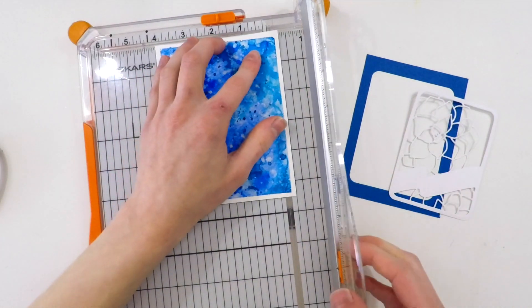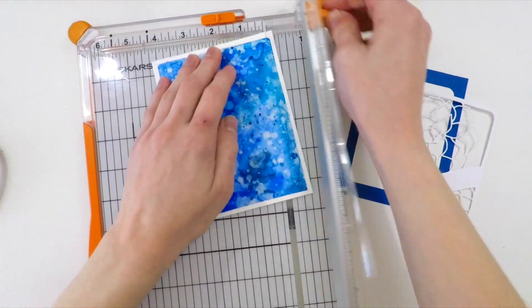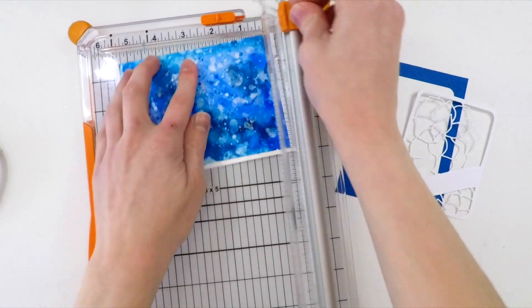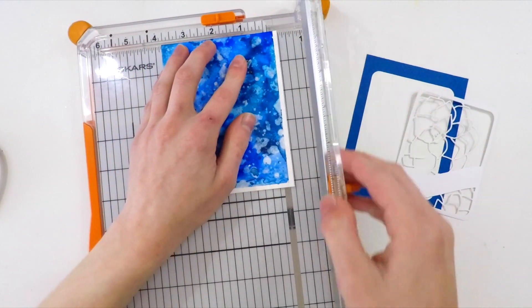With my now dry watercolor panel, I'm going to take it to my Fiskars reinforced trimmer and trim down the edges so that it's the same size as my frame, which is three and three quarters by five inches.